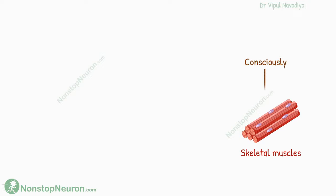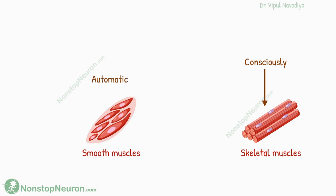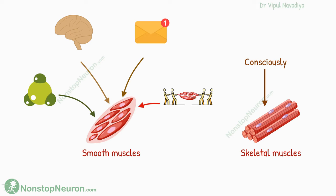Unlike skeletal muscles that we can control consciously, smooth muscles are controlled automatically by our body's internal systems. The factors that control smooth muscle contraction are nerves, circulating hormones, chemical changes in the local environment, mechanical factors such as stretch, and sometimes they even contract spontaneously.